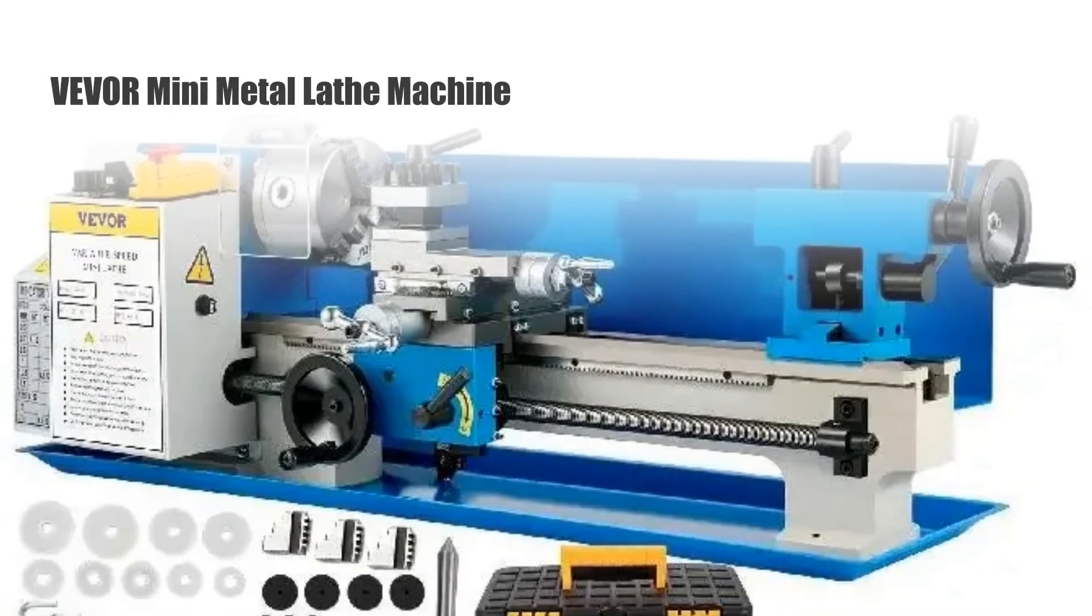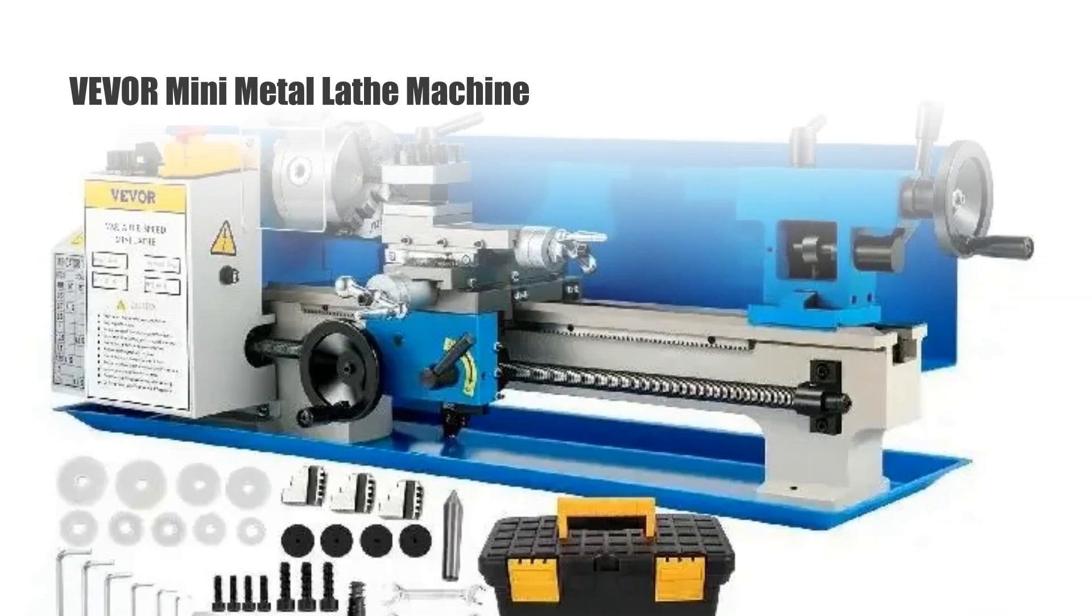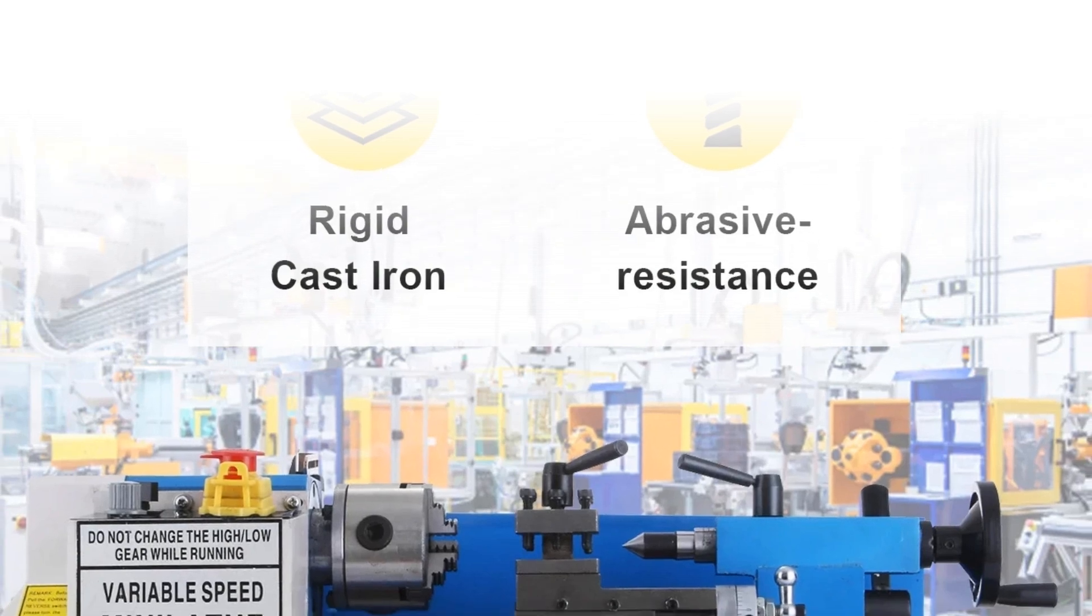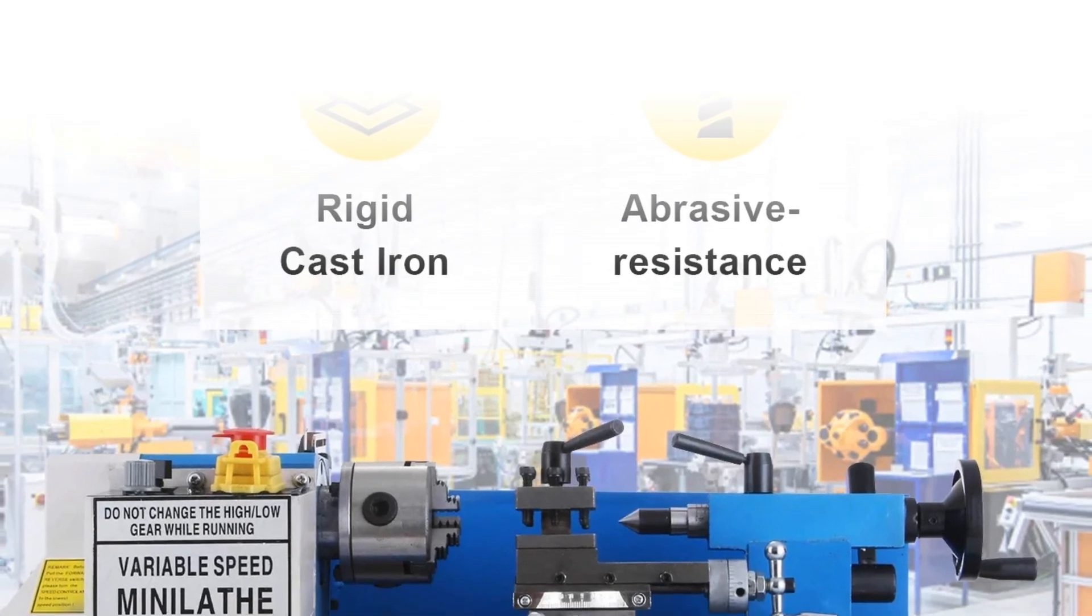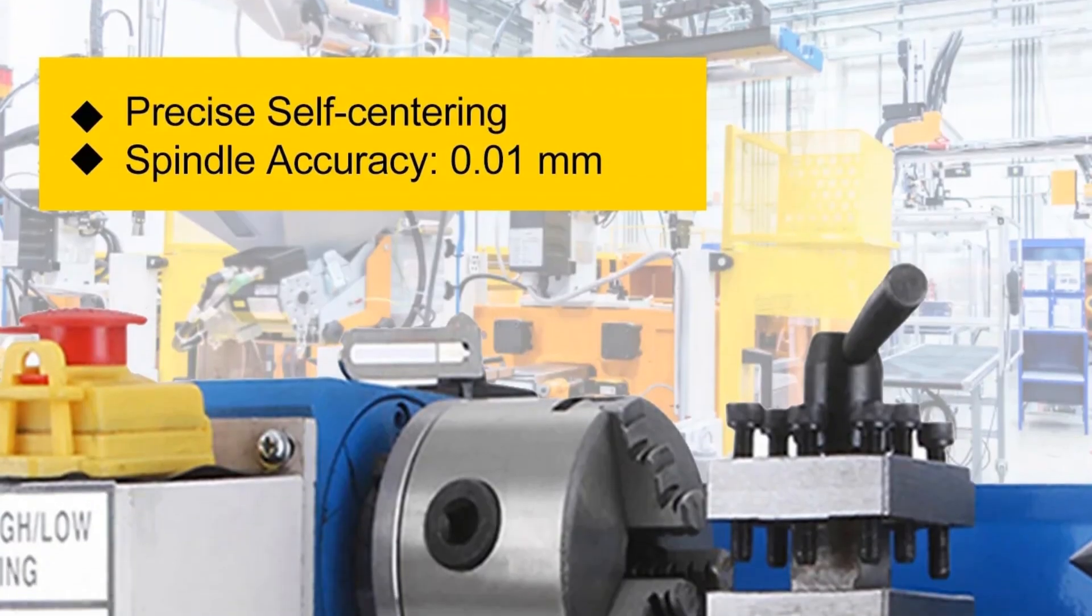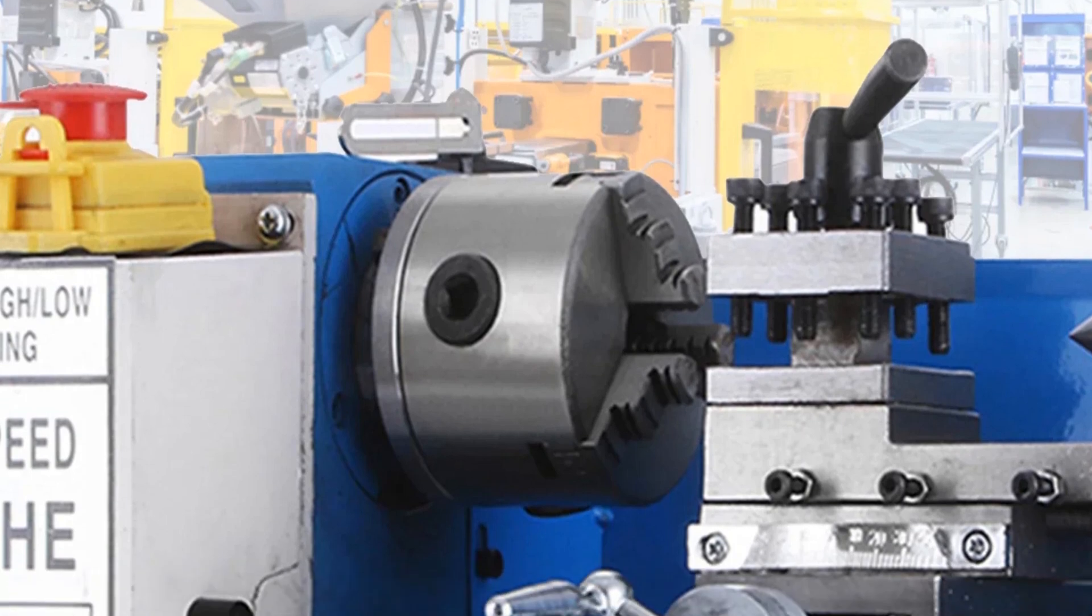Number 4, Vever Mini Metal Lathe Machine. The Vever Mini Metal Lathe Machine is a robust option for both metal and woodworking enthusiasts. With a 550W motor, it provides ample power for turning tasks. Its variable speed feature allows for precise control, accommodating various materials and threading requirements.